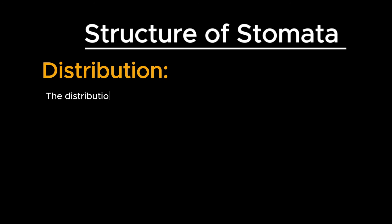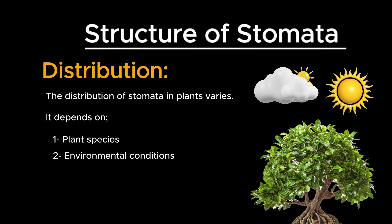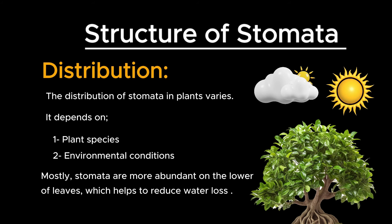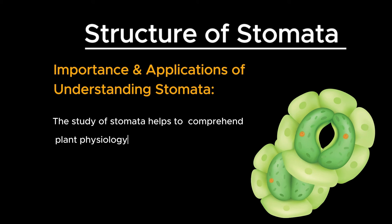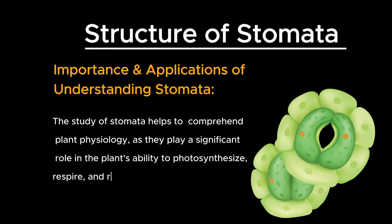Distribution of stomata on plant surfaces varies depending on the species and environmental conditions. In most plants, stomata are more abundant on the lower surface of leaves, which helps to reduce water loss by minimizing exposure to direct sunlight and wind. Understanding the structure and function of stomata is crucial for comprehending plant physiology, as these tiny structures play a significant role in the plant's ability to photosynthesize, respire, and regulate water balance.